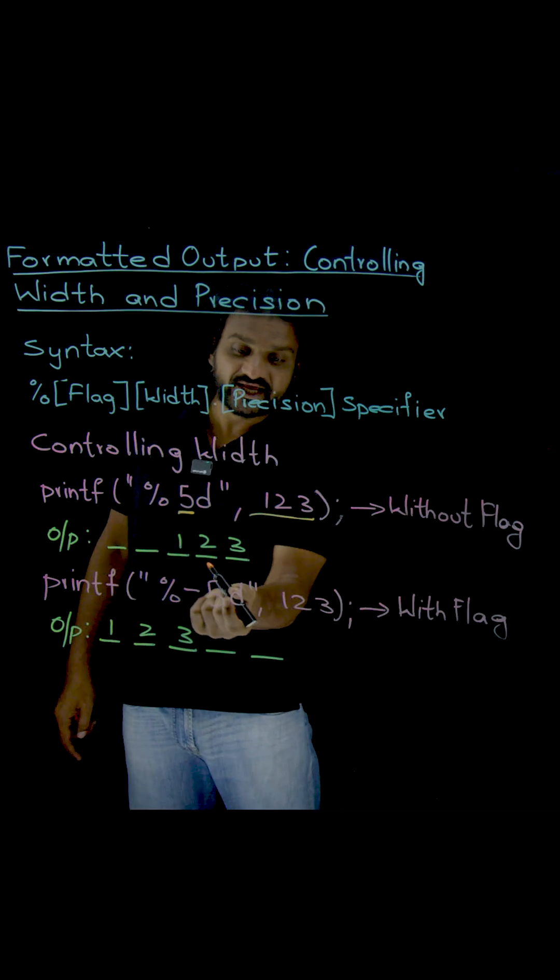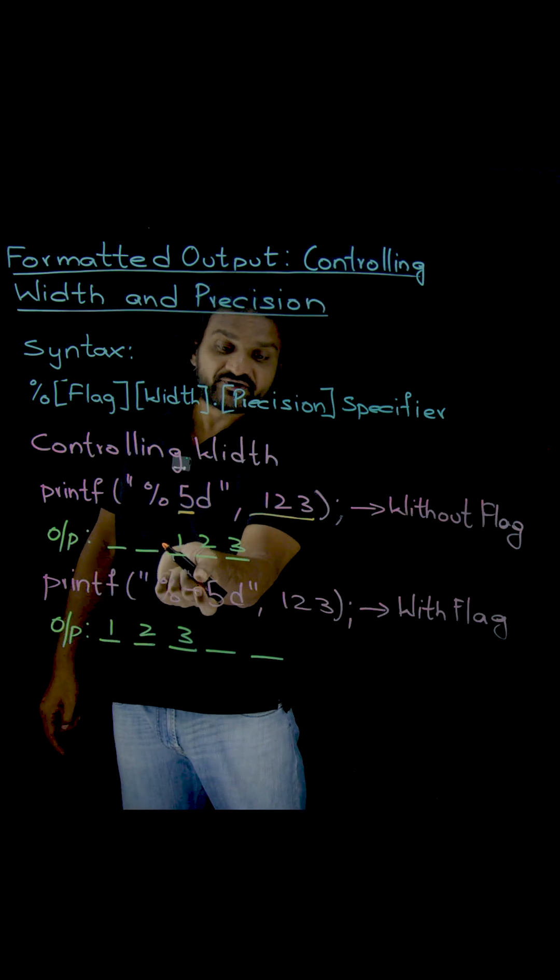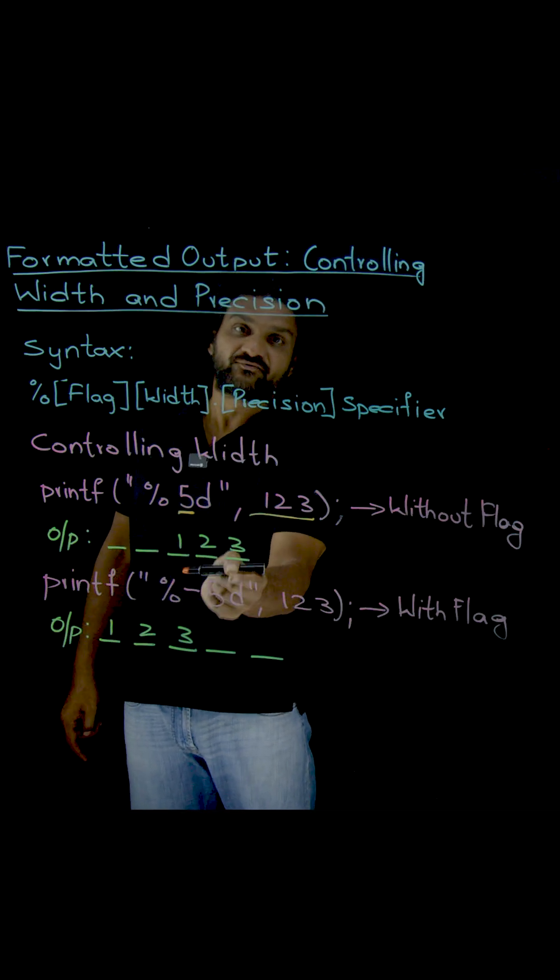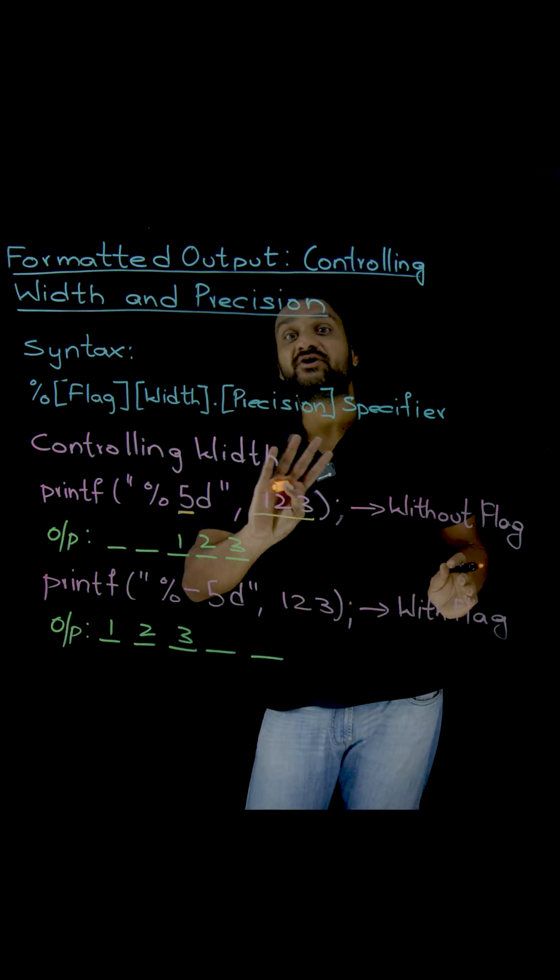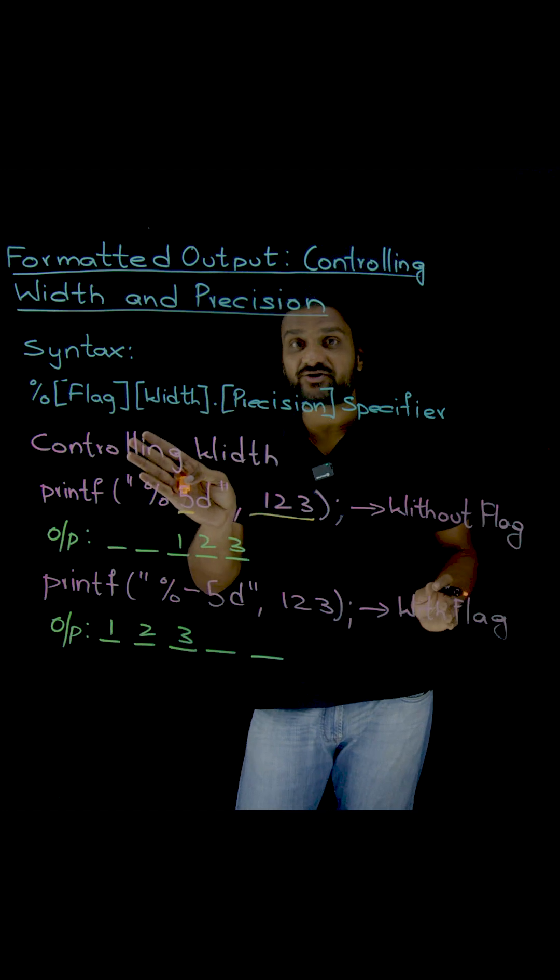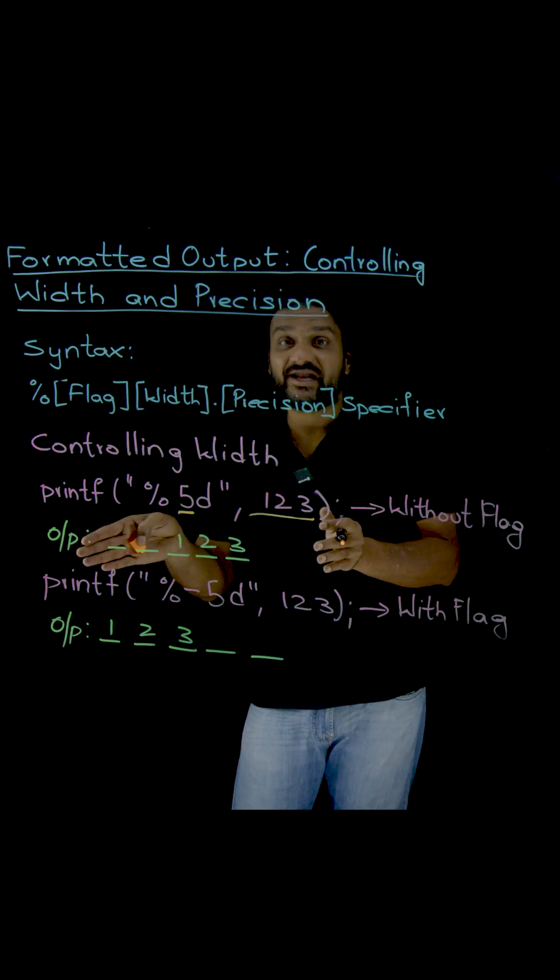What is that flag? Flag means a minus symbol. Whenever we use minus 5D, width is controlled, but the alignment will also get controlled. How will the alignment get controlled? It will become left aligned.